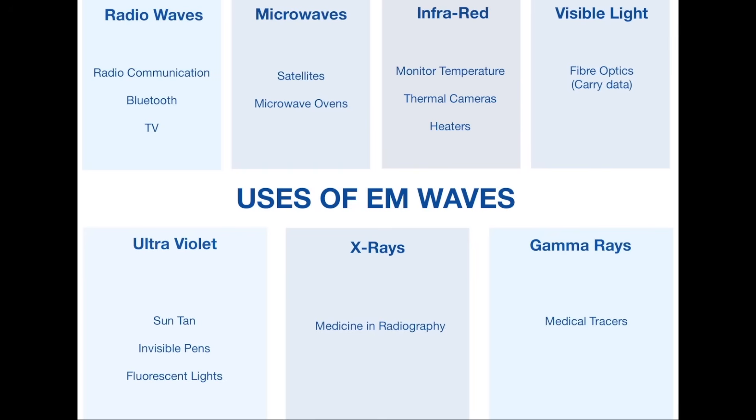X-rays: medicine in radiography, so X-rays and also radiotherapy. And finally, gamma rays: medical tracers. This is something that can be injected into someone and it can latch onto a certain type of cell that they want to track and will provide information to doctors and stuff like that.